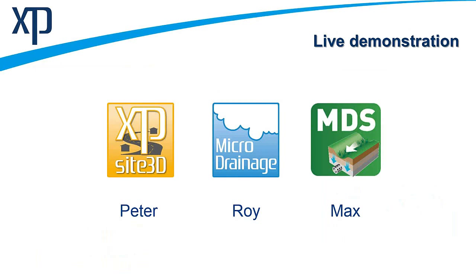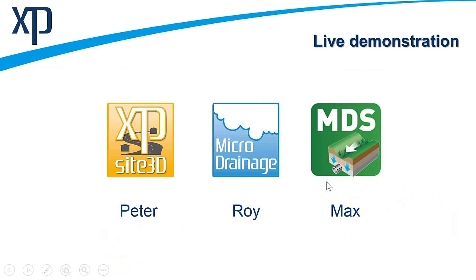We'll start with the live demonstrations. I'll begin with XPSight3D to create a road layout, then hand over to Roy, whose client wants a traditional drainage option — pipes and manholes — created in XPSight3D and brought into MicroDrainage in MDX format to produce a concept drainage design. We'll check soil investigation results to see if infiltration is possible, then Max will use MD SUDS software to create a sustainable drainage option to compare with Roy's traditional approach — potentially saving the client money and satisfying the approving authorities.